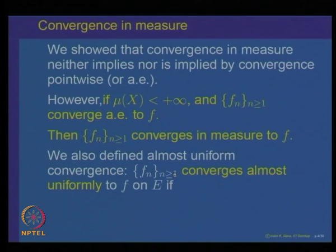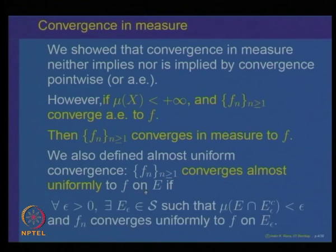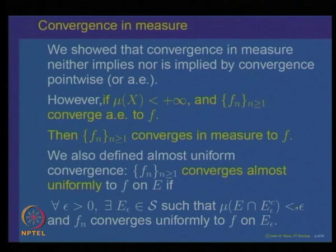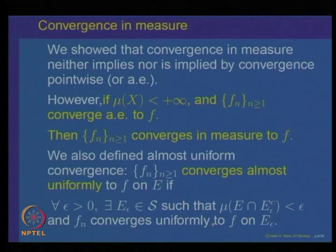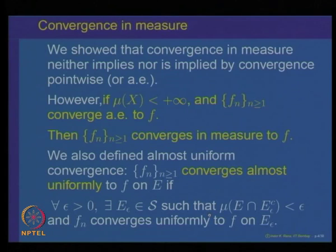After that, we looked at what is called almost uniform convergence for functions. We said a sequence F_n converges almost uniformly to F on a set E if for every epsilon we can find a subset E_epsilon such that the measure of the set E ∩ E_epsilon^complement is finite and F_n converges uniformly to F on E_epsilon. That means, except for a small set of small measure, F_n converges to F uniformly. This is called almost uniform convergence.